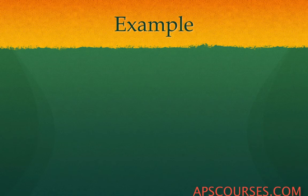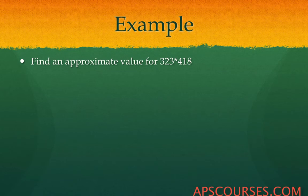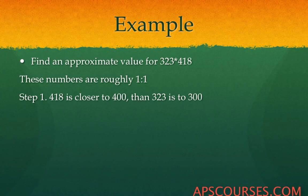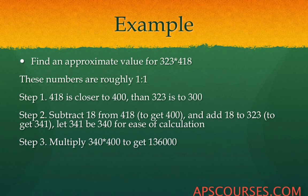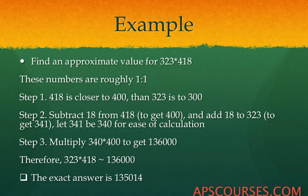Another example with a larger number: find the approximate value for 323 multiplied by 418. The numbers are again close to each other with a ratio of approximately 1 to 1.3. Since 418 is closer to 400, you subtract 18 from 418 and add 18 to 323 to get 341, which we approximate as 340. Multiplying 340 by 400 gives 136000. The exact answer is 135014, so you get a decent roundabout answer.